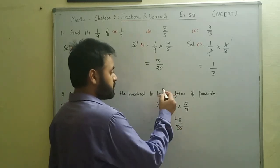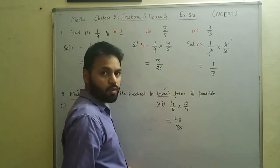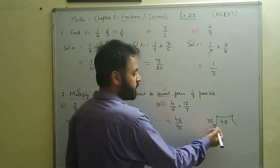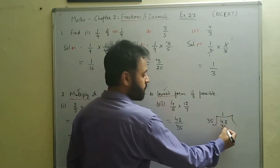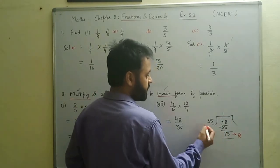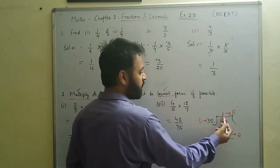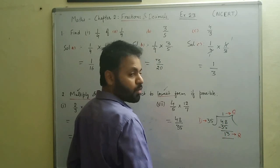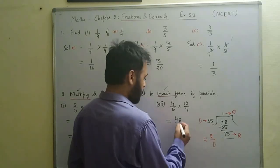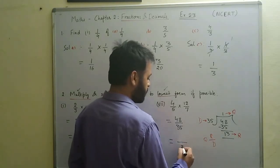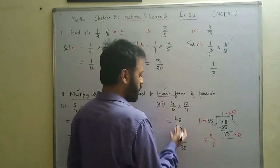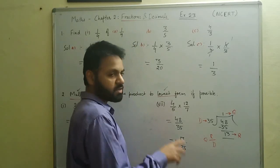We cannot reduce forty-eight by thirty-five to lowest form as they have no common factor. So we convert it to a mixed fraction by dividing forty-eight by thirty-five. Thirty-five once is thirty-five, and forty-eight minus thirty-five gives a remainder of thirteen. The quotient is one, divisor is thirty-five, and remainder is thirteen, so we write it as one and thirteen by thirty-five.